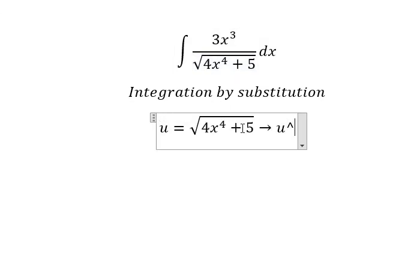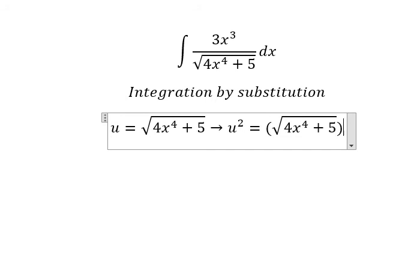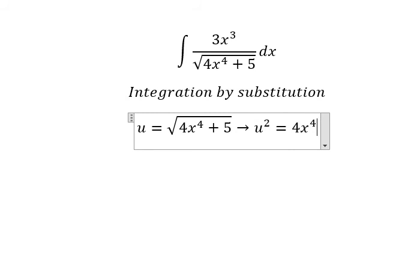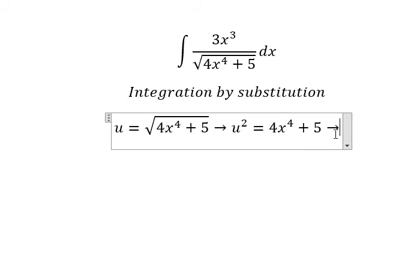Later that, we put the square for both sides to cancel the square root. Next, we need to do the differential for both sides.